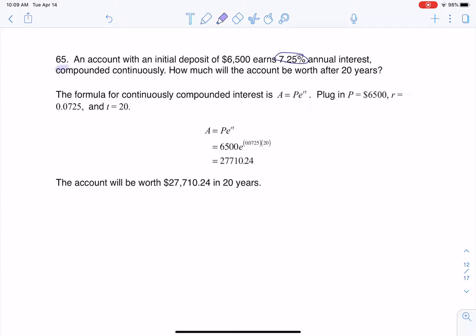The key phrase here is compounded continuously. As soon as we hear compounded continuously, we're going to use that PERT formula or A equaling Pe^(RT).